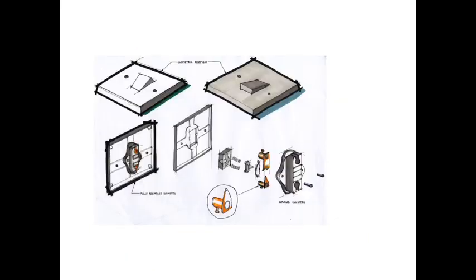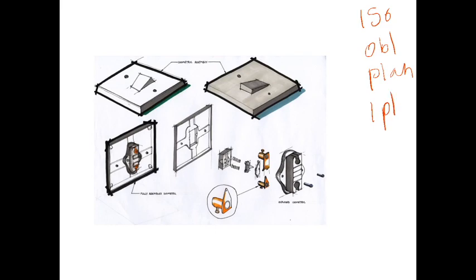Alright, let's have a look at the next one. Here are some drawings of some sort of electronic switching systems — lots of different drawings, maybe different types of modes. So again, we're going to write our list: isometric, oblique, planometric, one-point, and two-point. The first thing we're going to look for is any rectangles that we know to be rectangles that actually look like rectangles in this drawing.